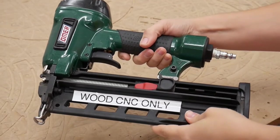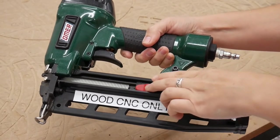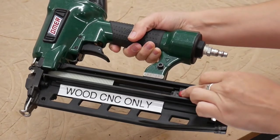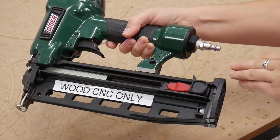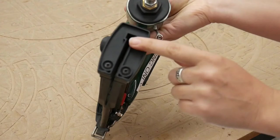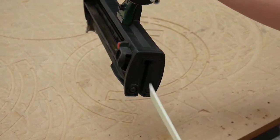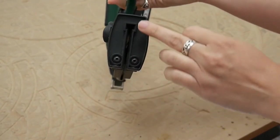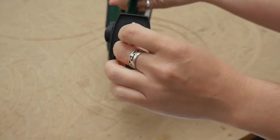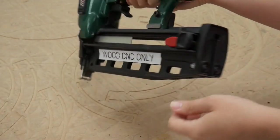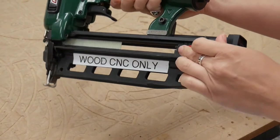To load or unload the brad nailer, press in and pull back on the red tab until it locks in place. Brads are loaded and unloaded through the slot in the back. When inserting the brads, make sure the heads are upright. Slide the brads into the slot, then press and slide the red tab back into place to secure.